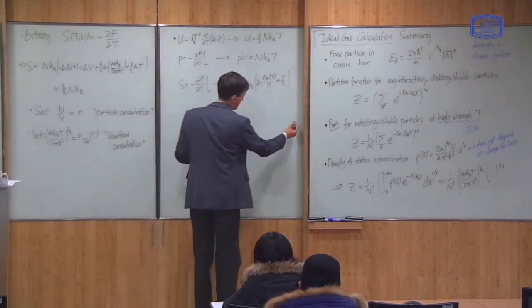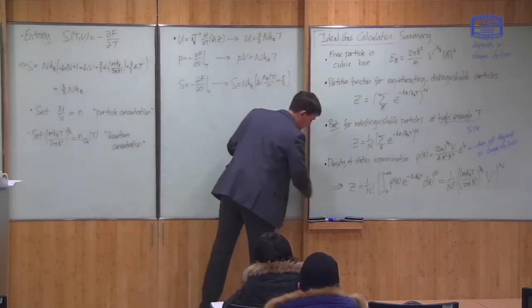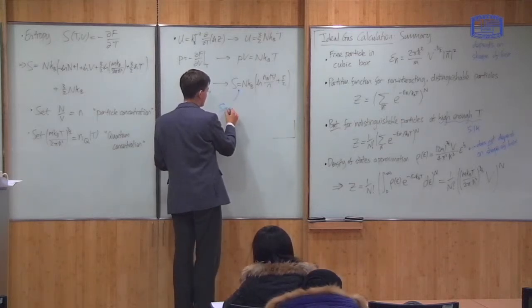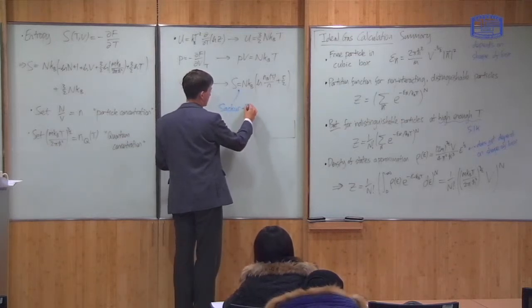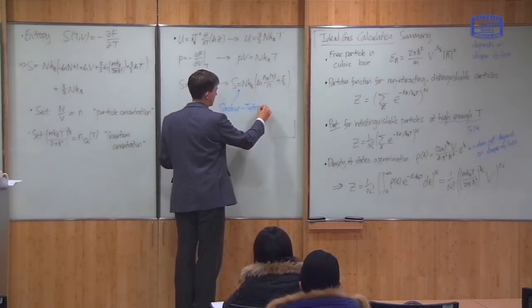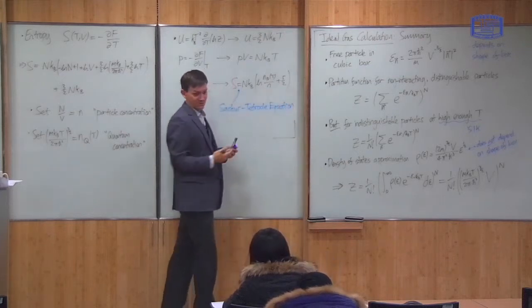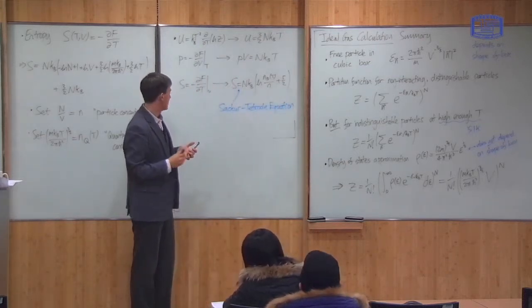So that's the end of the summary. I should say because I forgot to mention it at the time, this equation has a name, it's one for the entropy, it's known as the Sakur-Tetrode equation. It's just named after the people who first calculated it.